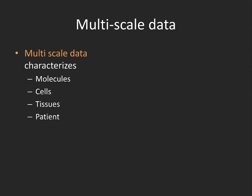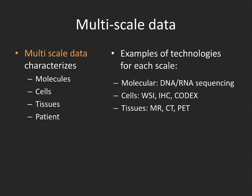What do I mean with multi-scale data? Essentially, technologies that are able to characterize different entities at different scales, ranging from molecules, cells, to tissues, and to the whole patient. Examples of these technologies at each scale are DNA and RNA sequencing for molecular data, whole slide images and immunohistochemistry to characterize cells, radiology images such as MRI, CT, and PET to characterize tissues, and electronic health records to provide data about the patient and their history.